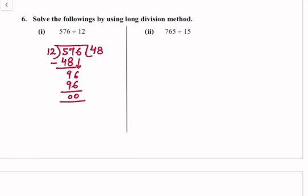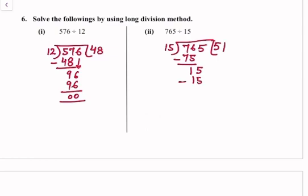765 divided by 15. 15 goes into 76 five times — 15 times 5 is 75. 76 minus 75 is 1, bring down 5 to get 15. 15 divided by 15 is 1. The remainder is 0.